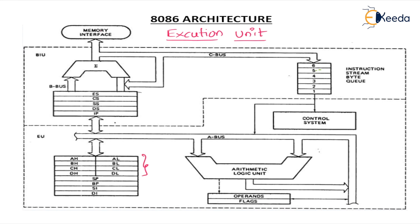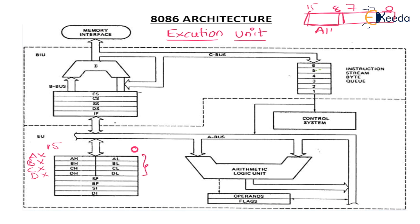Now coming to the registers: AH, AL, BH, BL, CH, CL, DH, DL. The register size of the 8086 microprocessor is 16 bit — starting bit is 0, maximum bit is 15. If you call it the AX register, it is divided into two 8-bit registers: AL (bits 0 to 7) and AH (bits 8 to 15). Similarly BX is divided into BH and BL, CX into CH and CL, and DX into DH and DL. These are called general purpose registers.